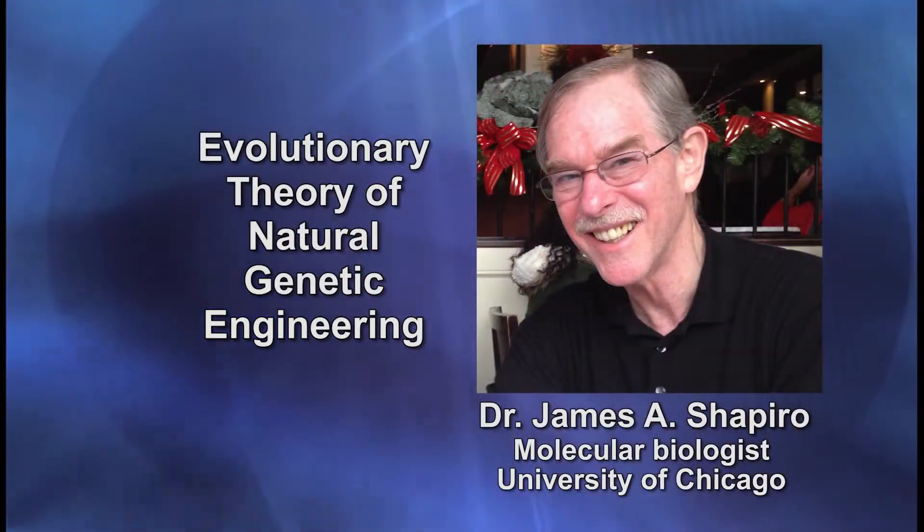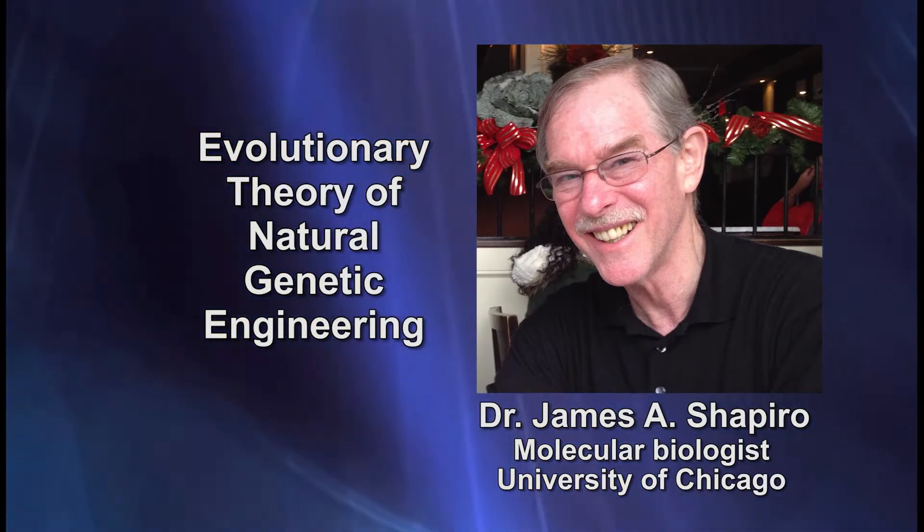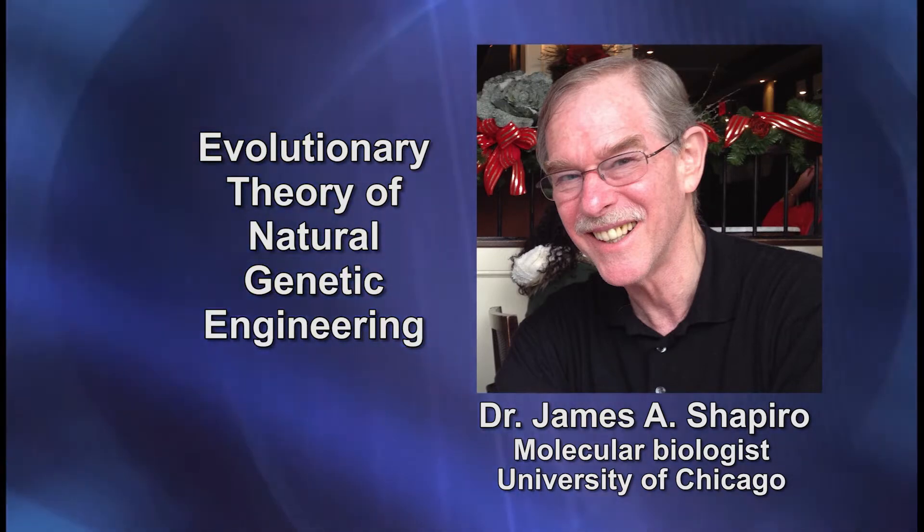For example, there's a wonderful new evolutionary theory known as natural genetic engineering, and it's been put forward by a really top cell biologist at the University of Chicago named James Shapiro, someone for whom I have great respect. Shapiro has shown that the mutations that Darwinists rely on to account for biological change are not actually random at all, but instead seem to be under what he calls algorithmic control. There's a pre-programmed adaptive capacity in organisms that allows them to respond to various kinds of environmental stressors. He's made a very good case that these types of directed mutations are occurring in response to various types of environmental challenges.